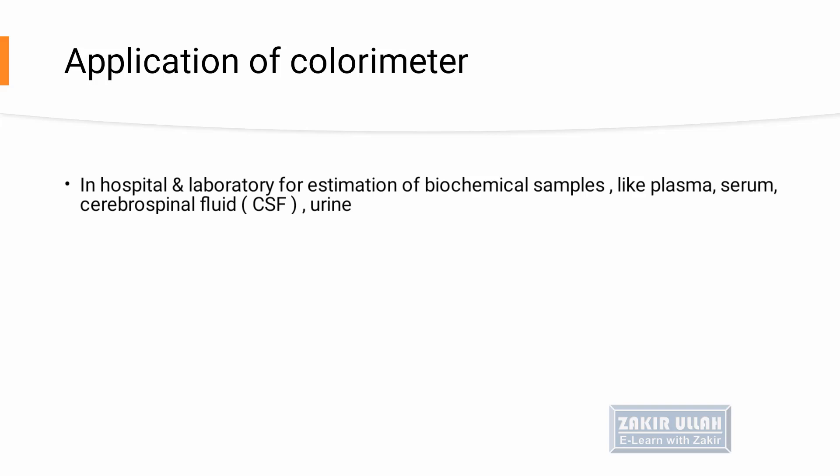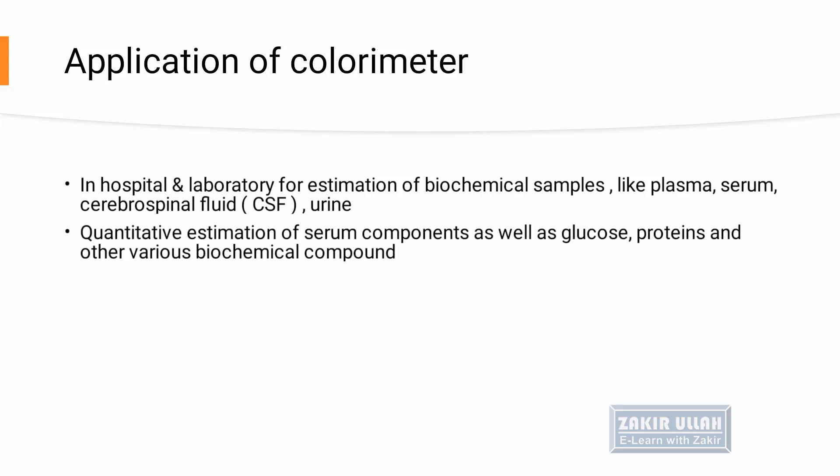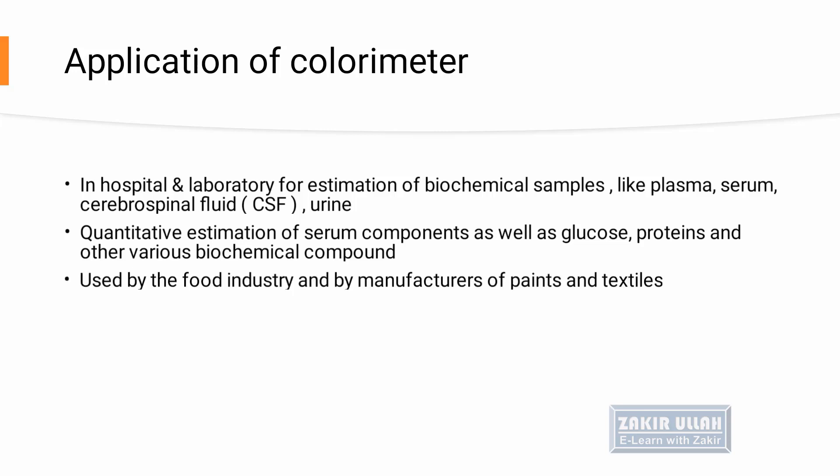Colorimeters can be used in hospital or medical laboratories for the estimation of biochemical samples like plasma, serum, cerebrospinal fluid, urine, and other body fluids to calculate different analytes and chemical substances. We can also calculate serum components such as glucose, proteins, and other biochemical substances in the blood. Colorimeters are also used in the food industry and manufacturing industry for the production of paints and textiles.